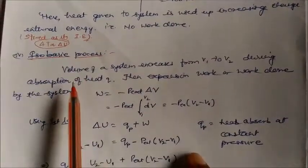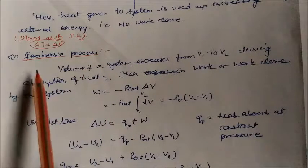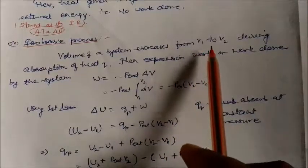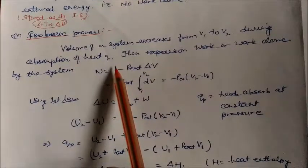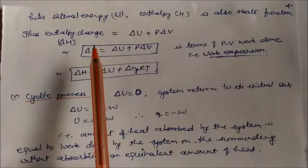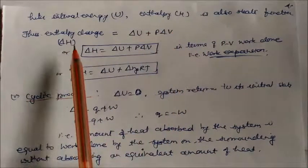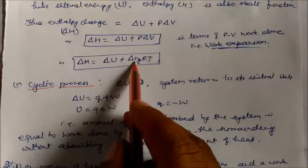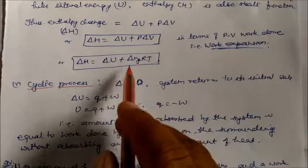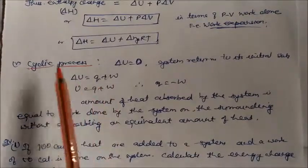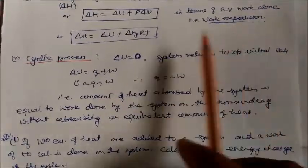In an isobaric process, pressure is constant — for example, evaporation. Volume increases from V₁ to V₂ upon heat absorption. Work done by the system is w = −p_external × ΔV = −p_external(V₂ − V₁). Using the First Law, ΔU = q_p + w, where q_p is the heat at constant pressure. Rearranging: q_p = (U₂ + pV₂) − (U₁ + pV₁) = H₂ − H₁ = ΔH.